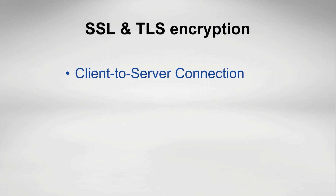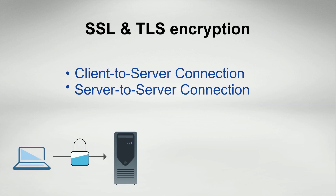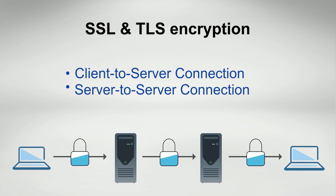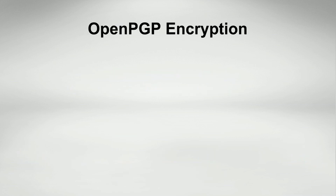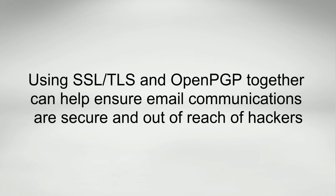Encrypting the connection is the simplest method and is accomplished using Secure Sockets Layer, or SSL, and Transport Layer Security, or TLS. Encrypting the message itself can be accomplished using OpenPGP. Using both methods together can help ensure that email communications are secure and out of the reach of hackers.